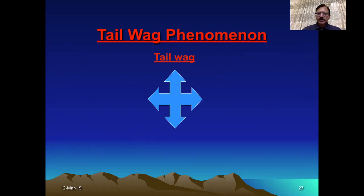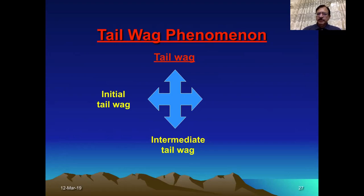There may be either the initial tail wag — which occurs immediately when the bullet leaves the barrel — the intermediate tail wag, when the bullet strikes some other medium such as glass, metal, or any other medium when entering into another medium, and the terminal tail wag, which occurs finally when the velocity is reduced and the bullet is about to strike the target, causing it to become unstable again.